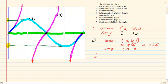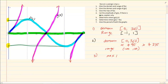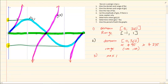For number 3, the maximum of f of x is 1, which is the highest point of the sin graph. For number 4, calculate the amplitude of g of x. Since the tan graph has no defined maximum or minimum, we need to consider whether an amplitude exists.